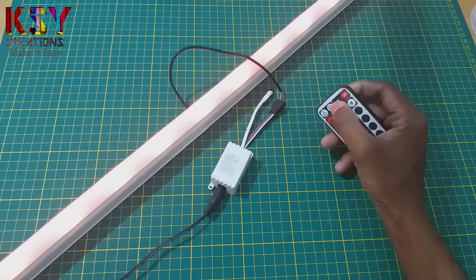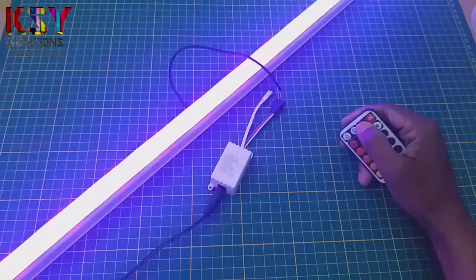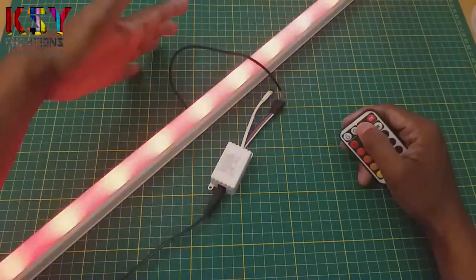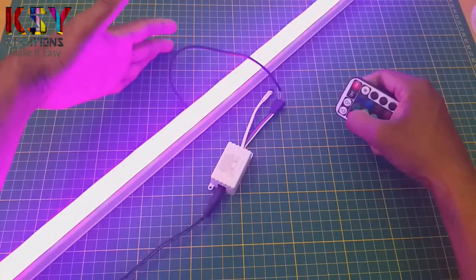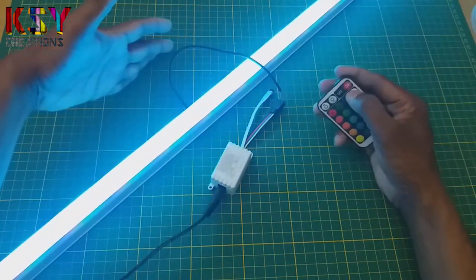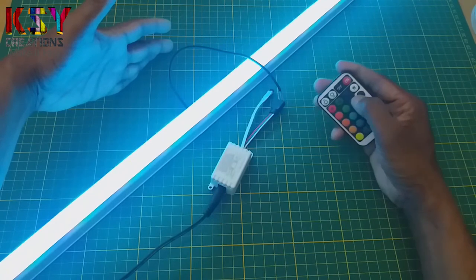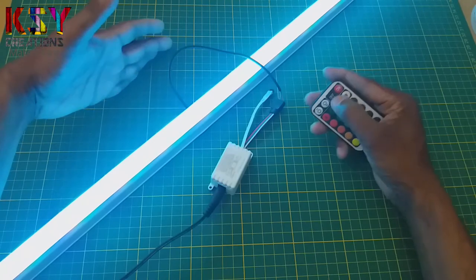In this way this tube light works. In this way we can convert this normal LED light into RGB LED light.